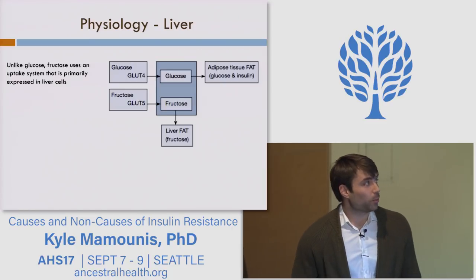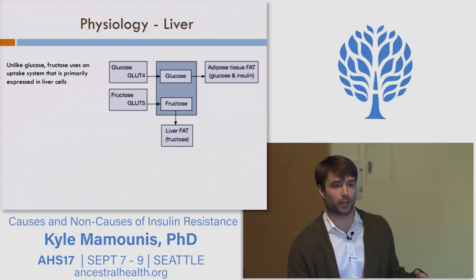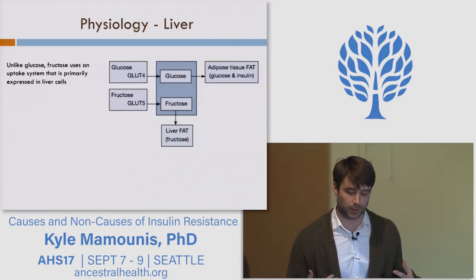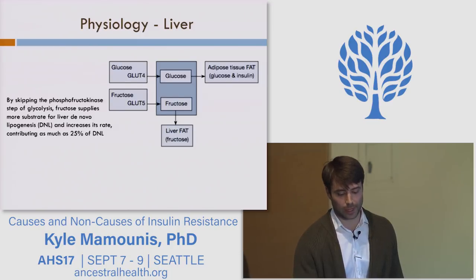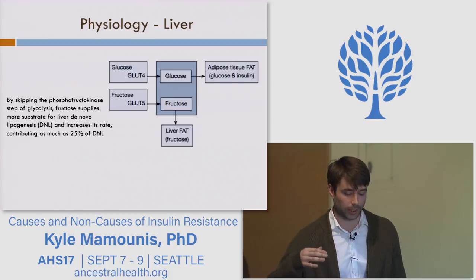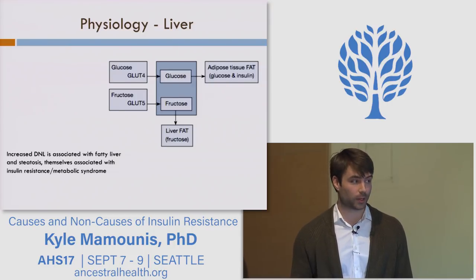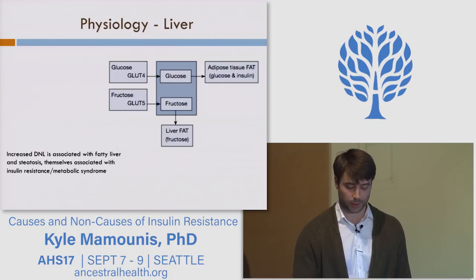At the liver, things are a little different — and this is mostly a fructose story. Fructose, unlike glucose — as in the Robert Lustig discussion — has a pernicious metabolism where it's preferentially taken up by the liver, is less insulin-dependent, and a lot of it can go into liver fat production. It gets thrown into glycolysis past the regulated step, is taken up rapidly, and as much as 25% of de novo lipogenesis can be caused by fructose intake. This can result in non-alcoholic fatty liver, which is independently associated with insulin resistance and metabolic syndrome.